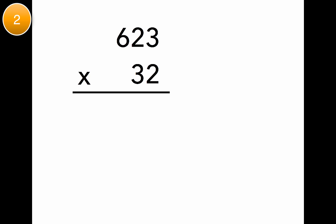Now we're going to multiply a bigger number. 623 times 32. Start in the ones. 2 times 3 is 6. 2 times 2 is 4. 2 times 6 is 12.